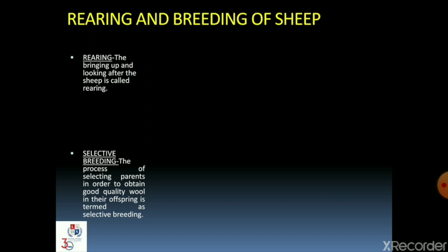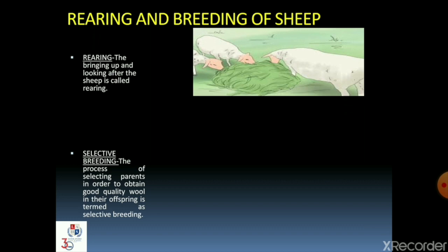We will first discuss the rearing and breeding of sheep. What is rearing? The bringing up and looking after the sheep is called rearing, as shown in picture 1. Rearing means to look after the sheep by providing them food, shelter, and health care. Apart from grass, the sheep are fed with pulses, corn, and oil cake.